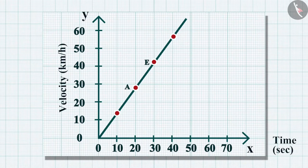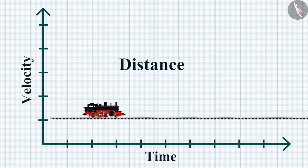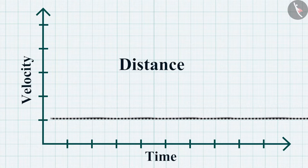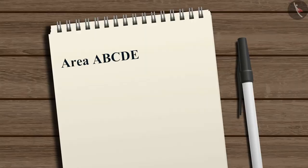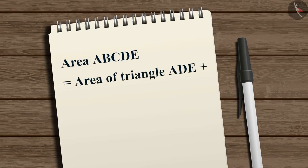For uniformly accelerated motion, the velocity-time graph is a straight line. We can also calculate the distance covered by the train from this graph. To find the distance traveled in a certain time interval, we calculate the area of shape ABCDE under the velocity-time graph, which equals the area of triangle ADE plus the area of rectangle ABCD.